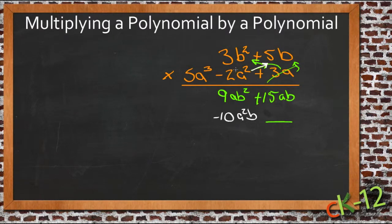And we have negative 2a squared times 3b squared. So we have negative 2 times 3 is negative 6. And a squared times b squared is just a squared b squared.